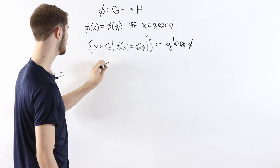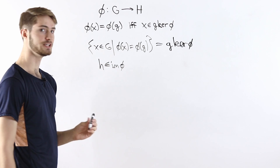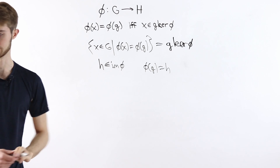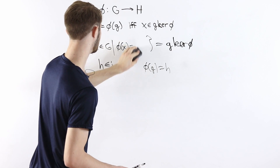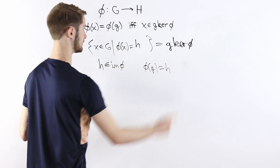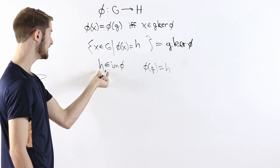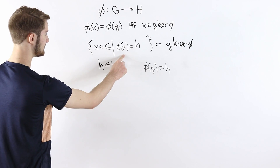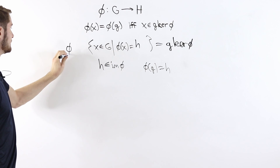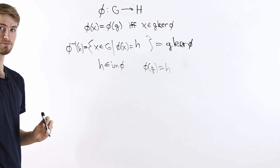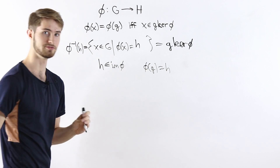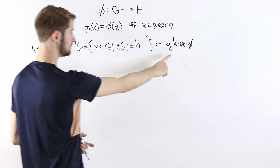Let's say we have some element h in the image of phi. Being in the image means there exists some element g such that phi of g equals h. Then the set of all elements of G satisfying phi of x equals h is g times the kernel of phi. So the set of elements that map to h is the coset g times the kernel of phi. But the set of all elements that map to h is exactly the pre-image phi inverse of h. So the pre-image of a single element h in the image of phi is a coset of the kernel of phi.